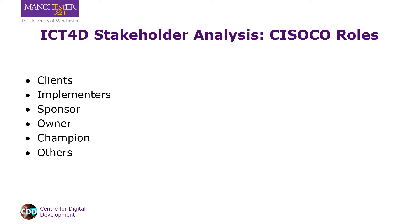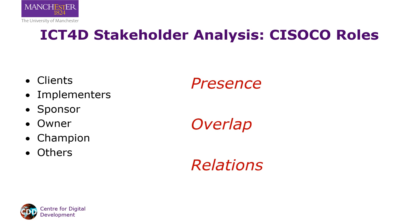Armed with this SISOCO checklist, you can then ask three questions. To what extent are the roles present? If there's no champion, for example, it's unlikely the project will succeed. To what extent is there overlap between the roles? If the sponsor, the owner and the champion are all the same person, that bodes well for the project.